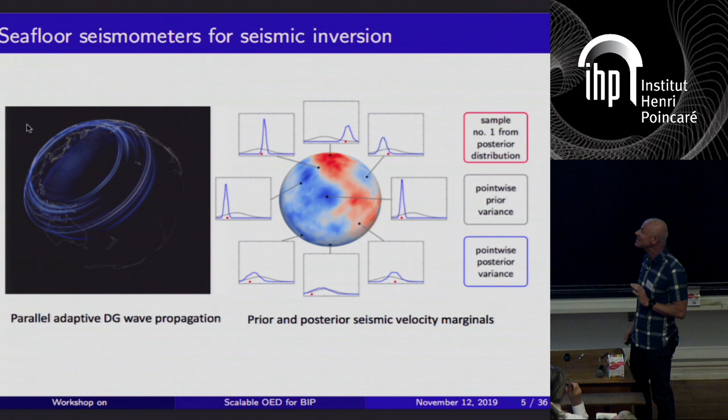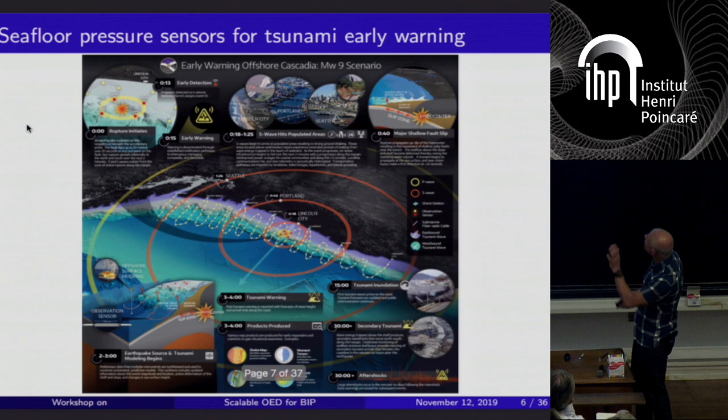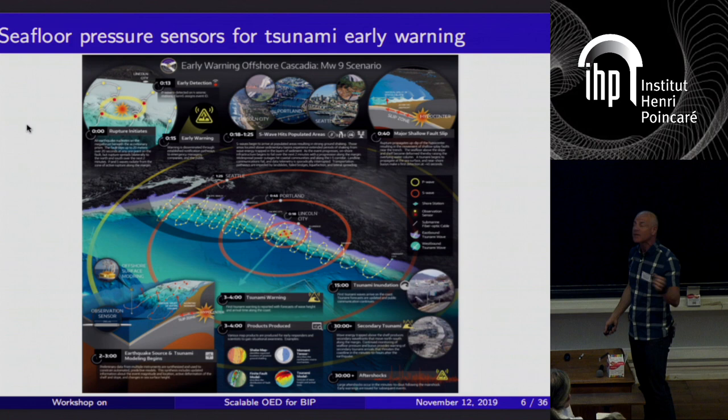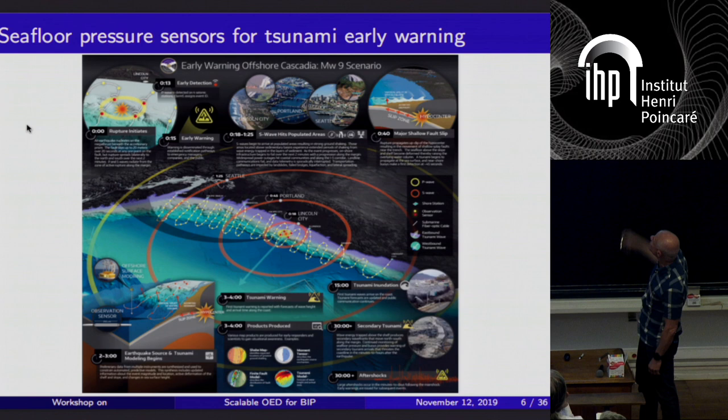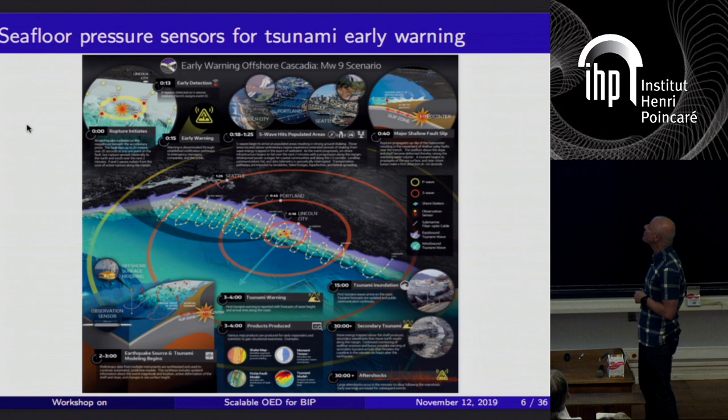The question is where to put these seismometers — you'd like to infer the most about the structure and state of the subduction zone. Here's a third example: the Cascadia tsunami early warning system. There's a plan to place seafloor acoustic devices and sensors connected by a fiber cable system. The question is where to put this in order to provide the best information about seafloor uplift in the seconds after a major rupture, to provide an early warning.